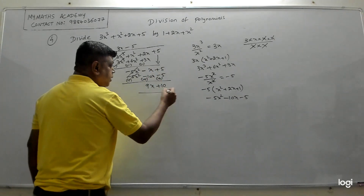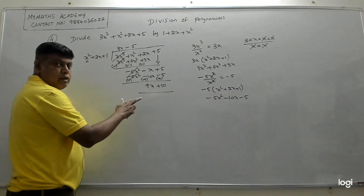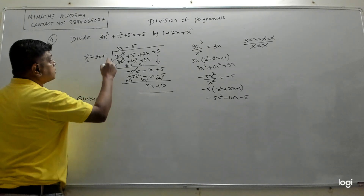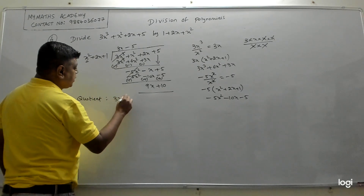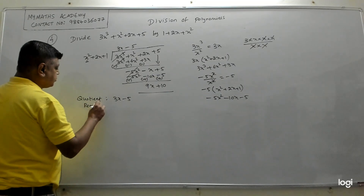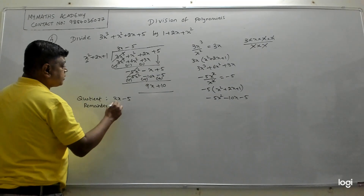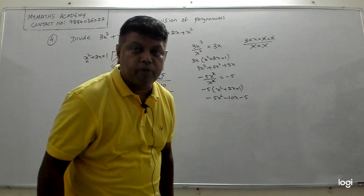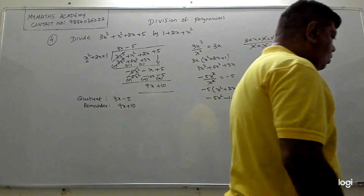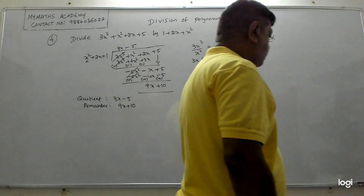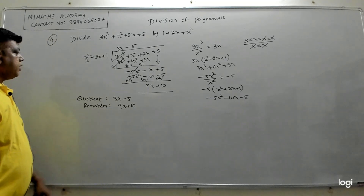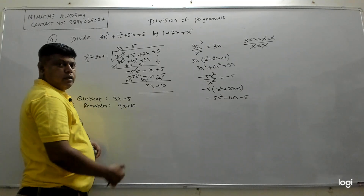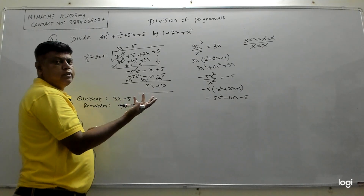We stop here because we have a remainder. The quotient is 3x − 5 and the remainder is 9x + 10. Remainder need not always be 0 — sometimes you will get a non-zero remainder.